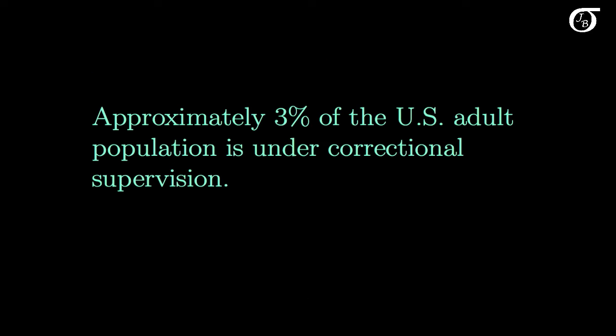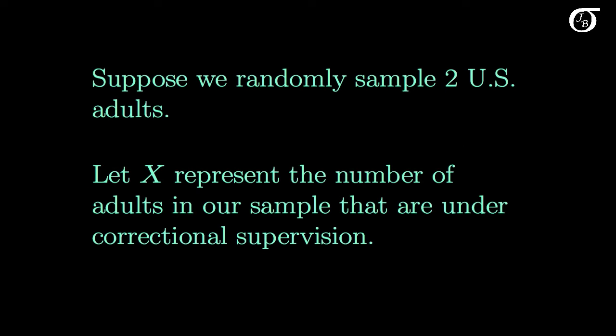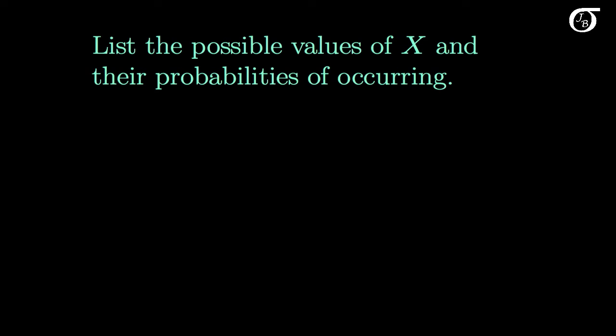Let's go back to discrete random variables and look at an example. Approximately 3% of the United States adult population is under correctional supervision, meaning they're either in jail, on probation, or on parole. Let's pretend that's exactly true for this example. Suppose we randomly sample two US adults and let capital X represent the number of adults in our sample that are under correctional supervision. We typically represent random variables with capital letters near the end of the Roman alphabet, so often X, Y, or Z.